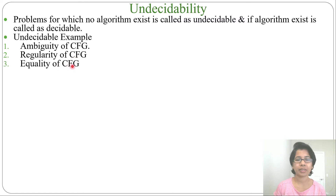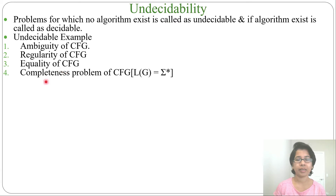Third, equality of CFG — whether two context-free grammars are equal or not is undecidable. Then, the completeness problem of CFG: given some grammar, you cannot decide whether that grammar will generate all strings or not — that is, whether it is for the universal language or not. That is the completeness problem of CFG and it is undecidable.